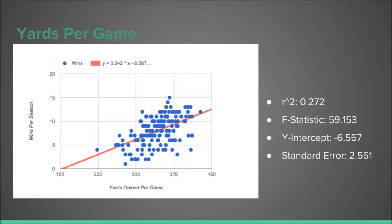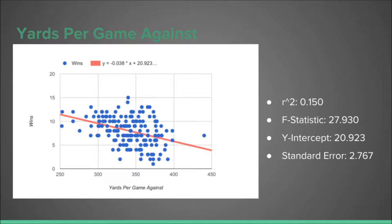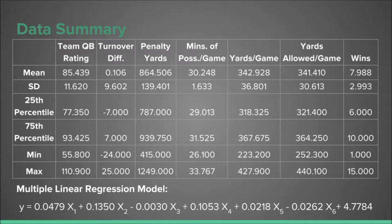Yards per game was a slightly better predictor than time of possession, but it still was not very reliable. Lastly, we found that while yards per game against had a negative effect on wins, as we predicted, the R-squared was the second lowest of all the data we tested.